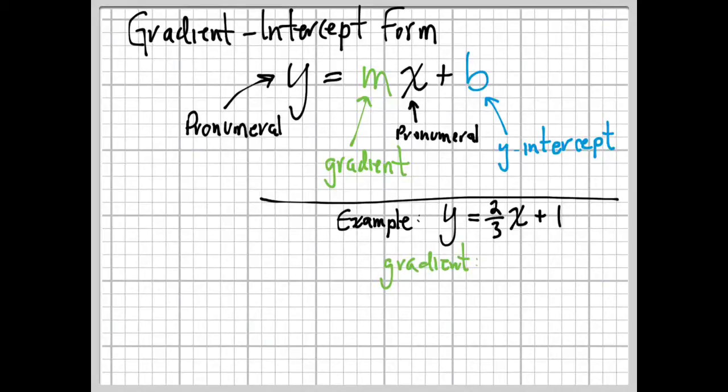As mentioned, the letter m represented the gradient in gradient intercept form. It's the number that's right in front of the x. For this one, our gradient is two-thirds. It's that number in front of the x.